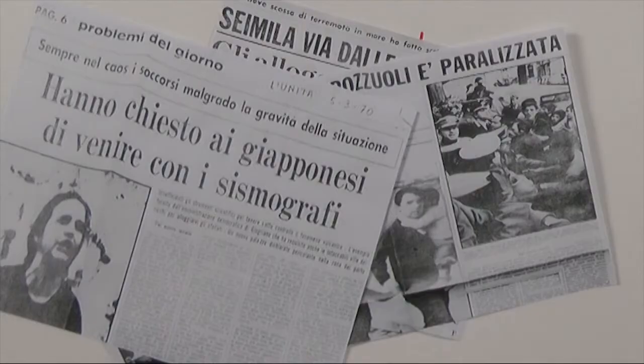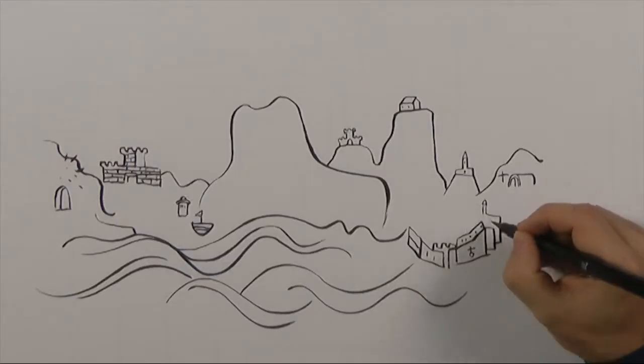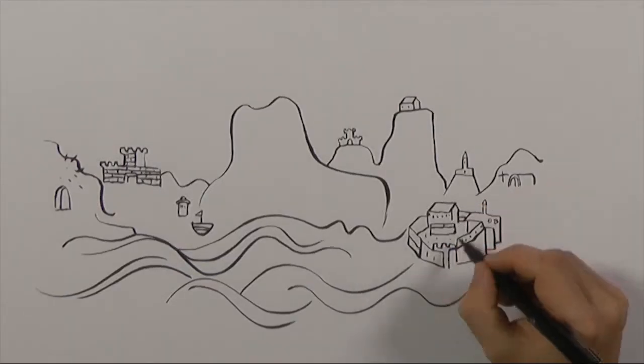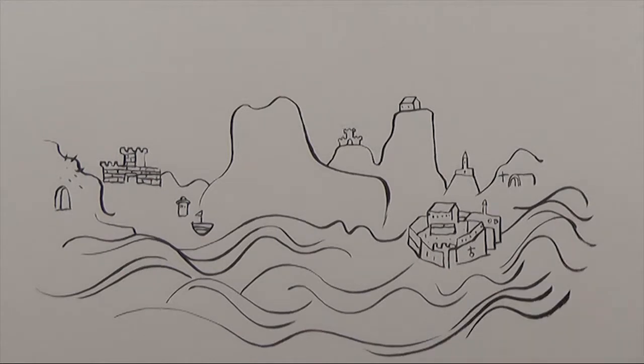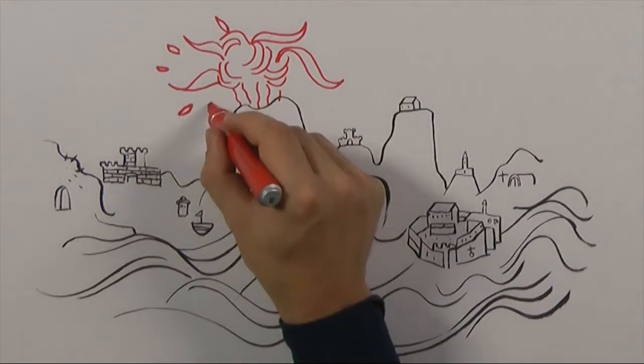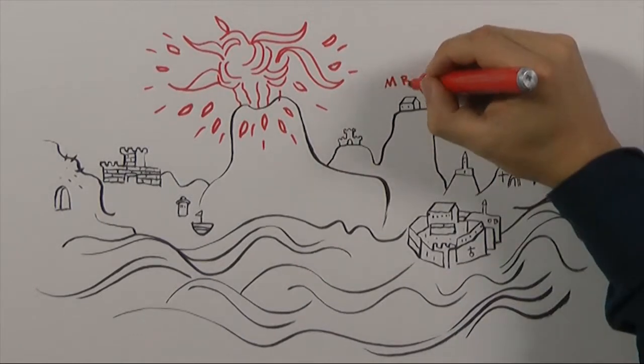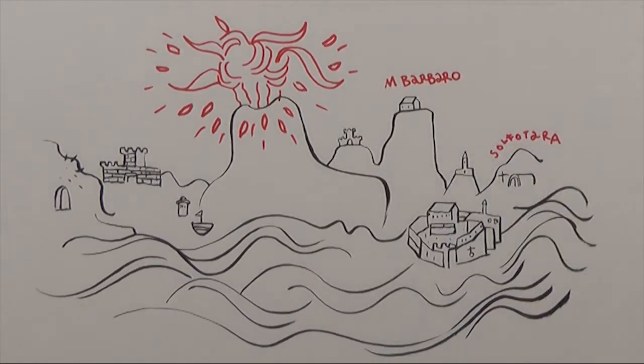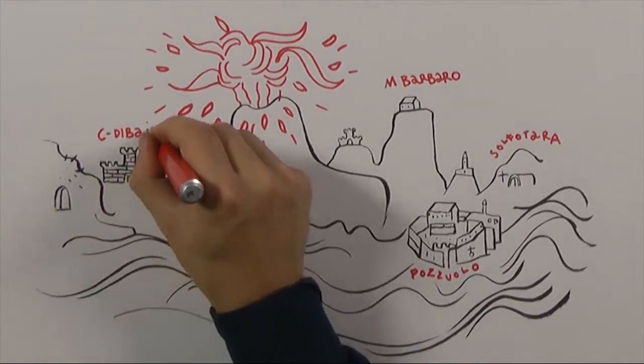However, we cannot lower our guard. In 1538, things went differently. Seismicity and ground motion culminated in an eruption that destroyed the small village of Tripergoli and left a brand new mountain, Monte Nuovo.